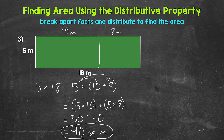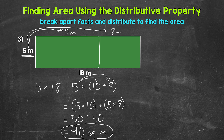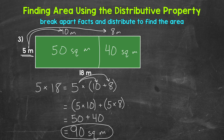5 times 18 equals 90, and we were able to use the distributive property to break that down into multiplication facts we could use. We took 5 meters and distributed it to 10 meters and 8 meters. 5 meters times 10 meters gave us 50 square meters, and 5 meters times 8 meters gave us 40 square meters. 50 plus 40 gave us that total area of 90 square meters. So there you have it — that's how to find the area of a rectangle using the distributive property. I hope that helped. Thanks so much for watching. Until next time, peace.